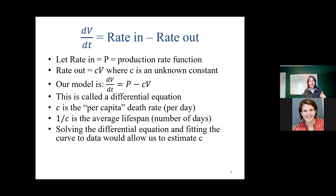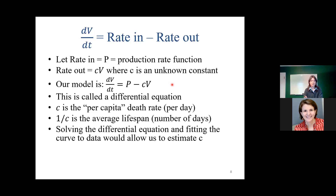Protease inhibitors are a class of therapies for viruses; they prevent the HIV from producing new copies of itself. So we're talking about our P — the unknown mysterious function — these drugs can turn it off. In that case, P is replaced by zero. So then what happens to our equation? What kind of equation does it become? I'll throw out some general questions and people can chat with whatever they'd like to mention.